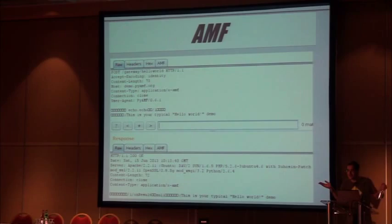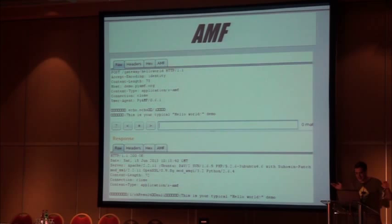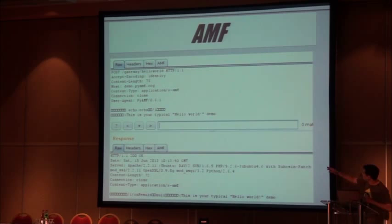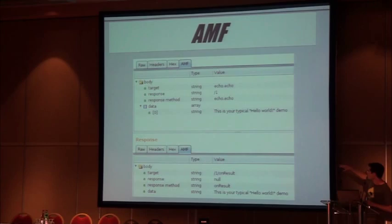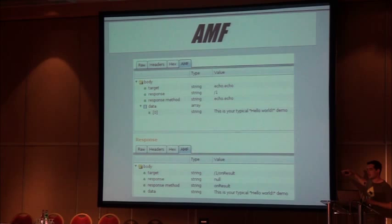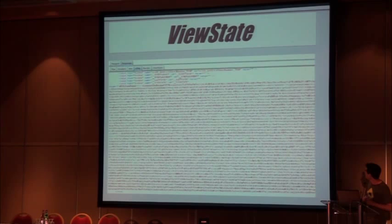AMF — Action Messaging Format — is related to Flash applications. You can also add Python scripts for that. AMF is a mix between binary data and clear text strings, so it's somewhat readable but you have no clue what each part is — whether it's a string or an object description. The AMF tab does something very nice. If you have complex objects, you get all the details. This is very easy to read.